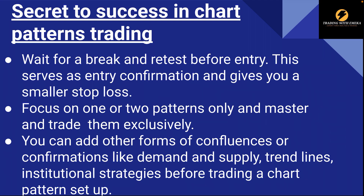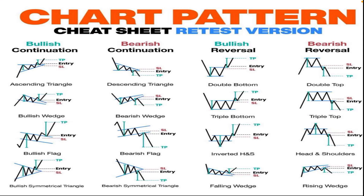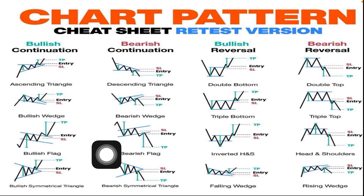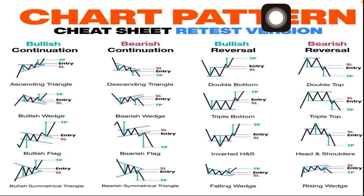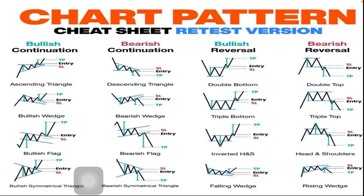Those are the three things that can help you be successful trading retail chart patterns. This is the retest I was talking about — when price breaks to the other side, wait for a retest, meaning price coming back to where the break happened. Like in this bearish wedge: price broke down, came back to retest, and then sold. After a successful retest with price moving in the intended direction, you can enter your trade and place your stop loss just after the retest point. That gives you a tighter stop loss and a higher risk-to-reward ratio.